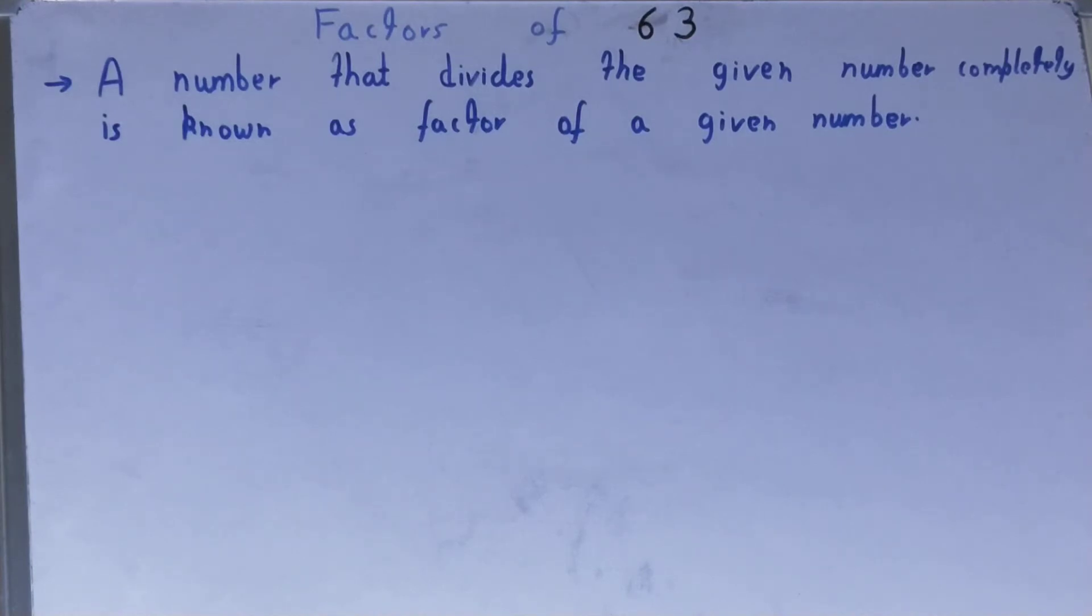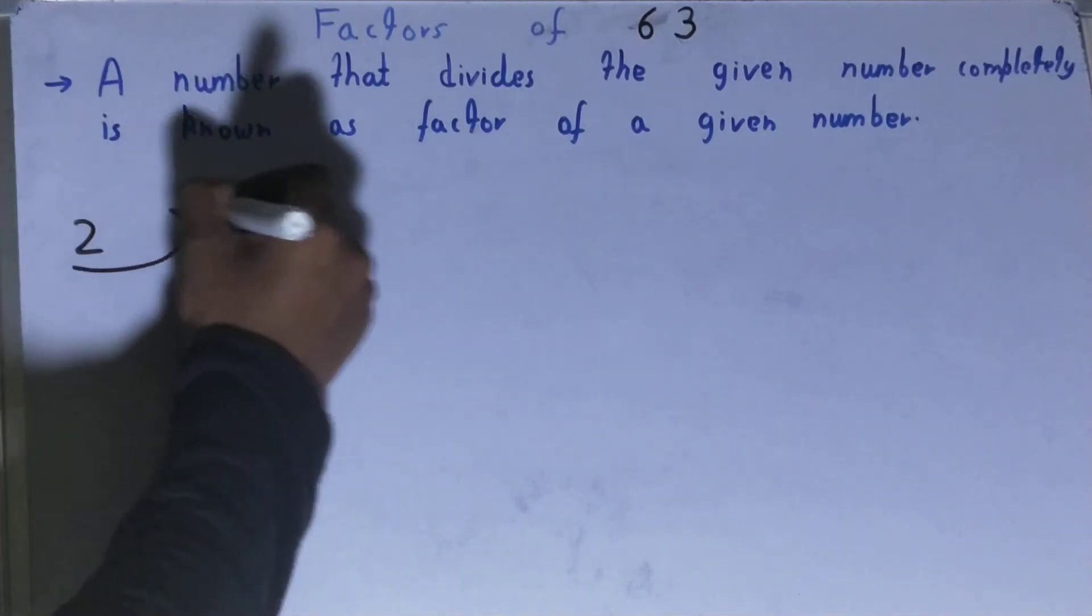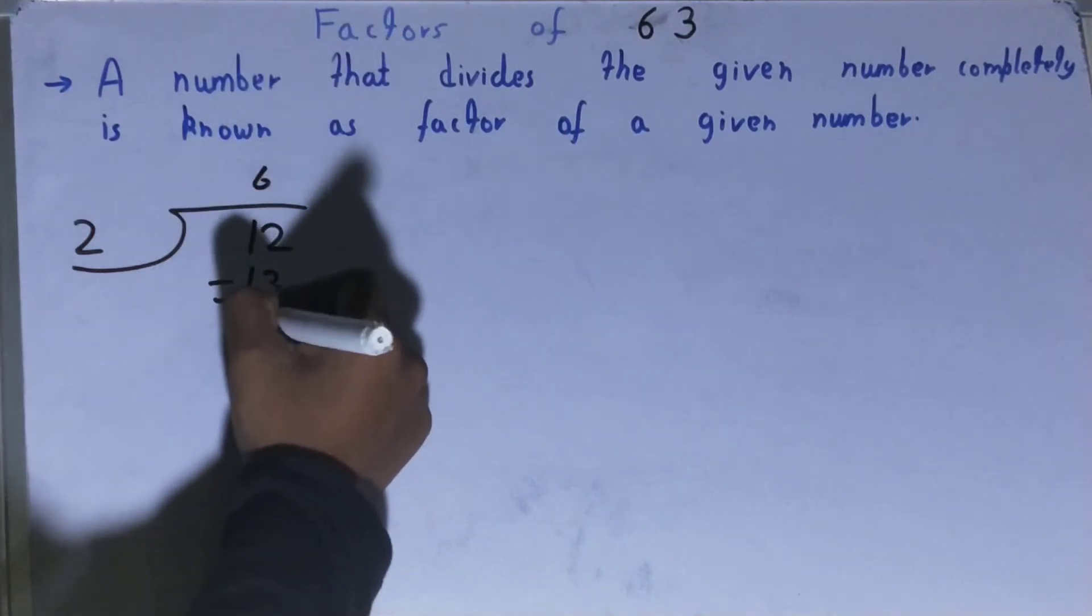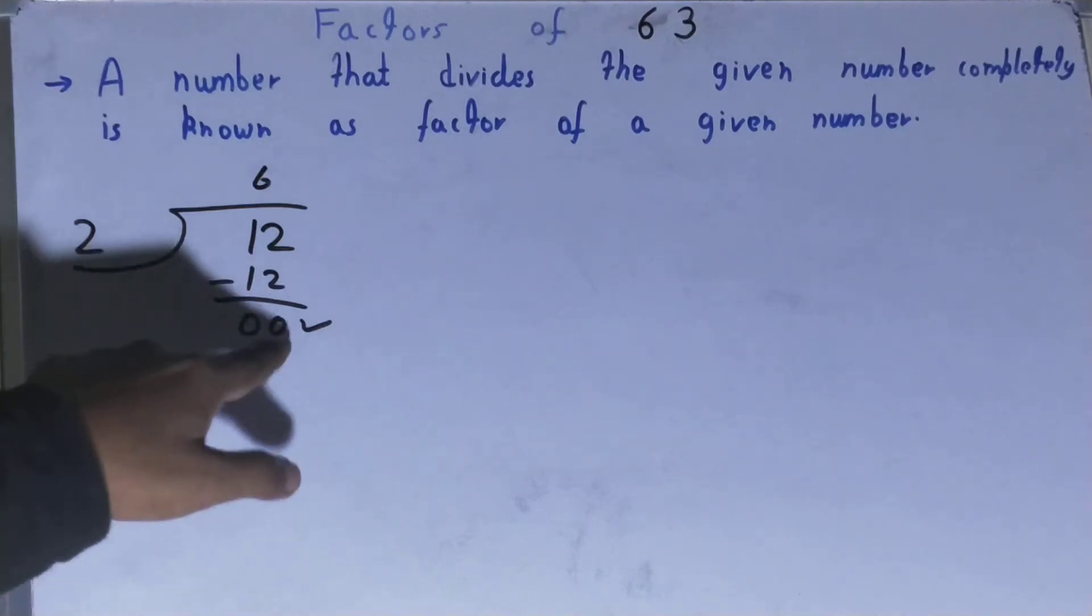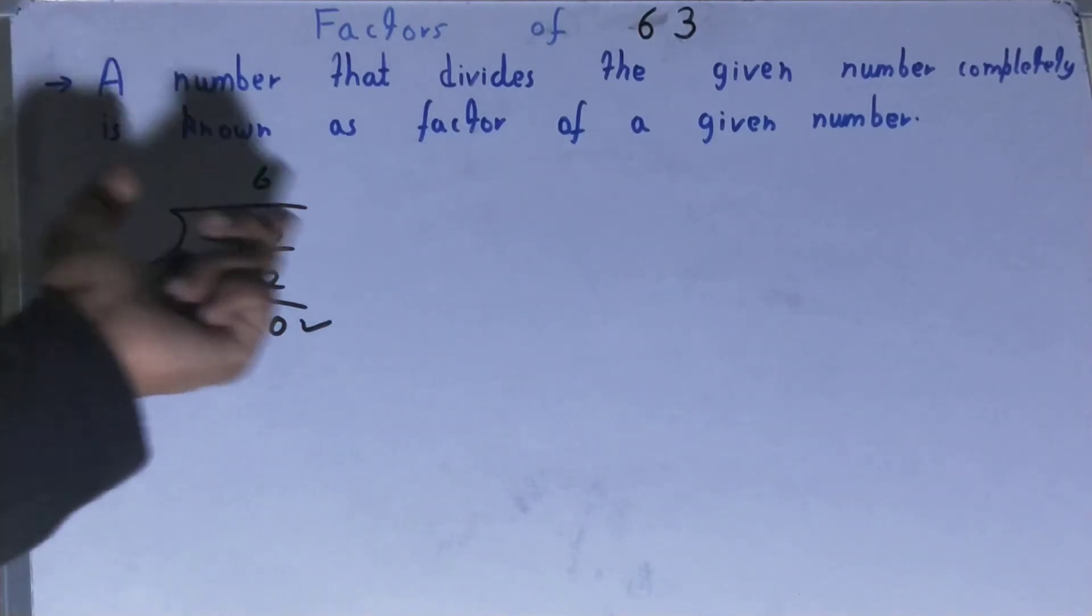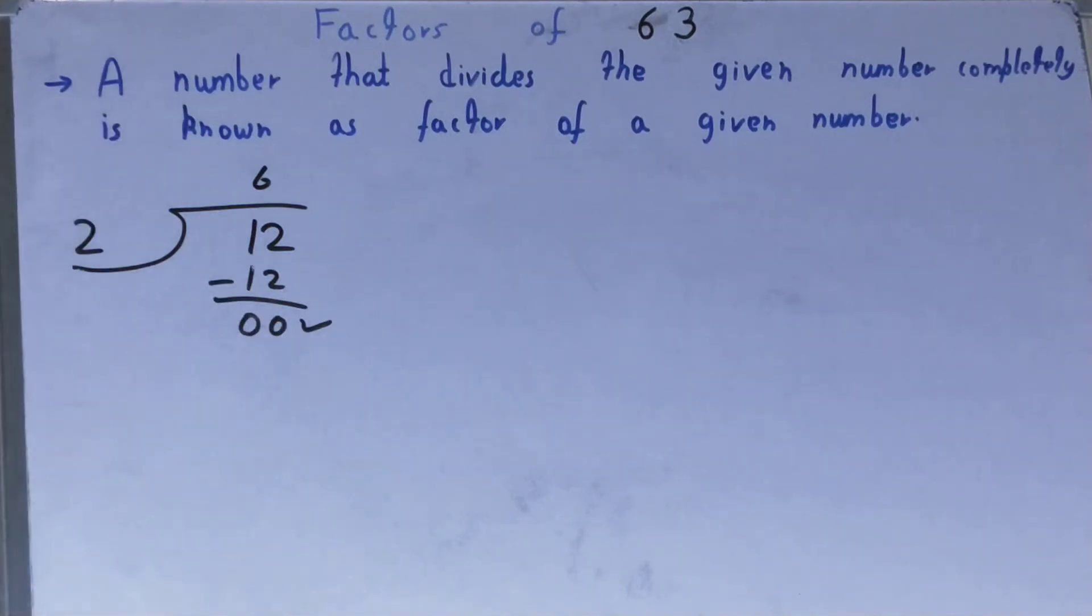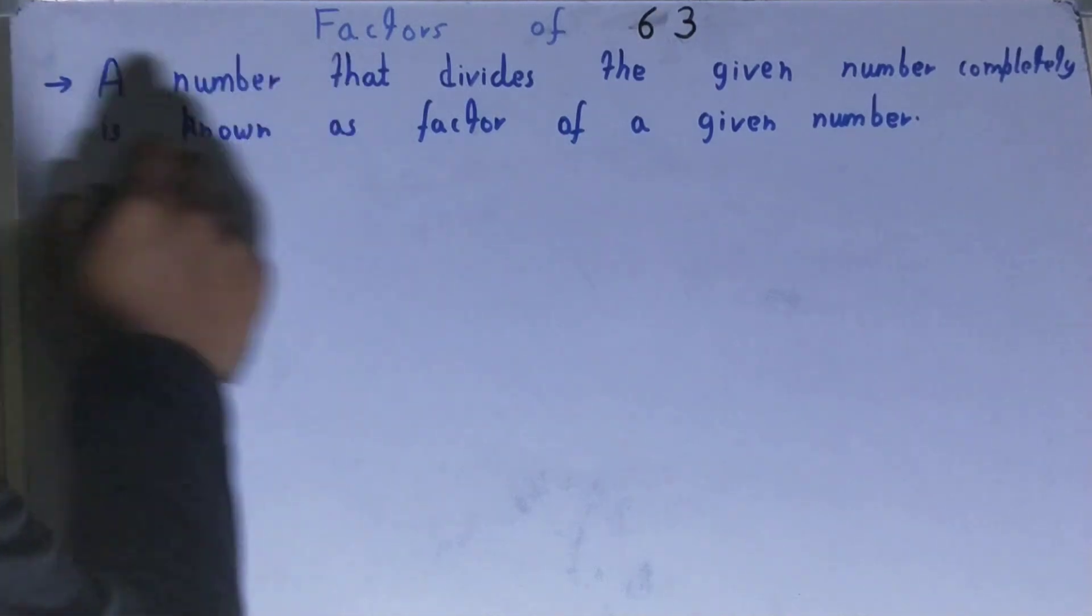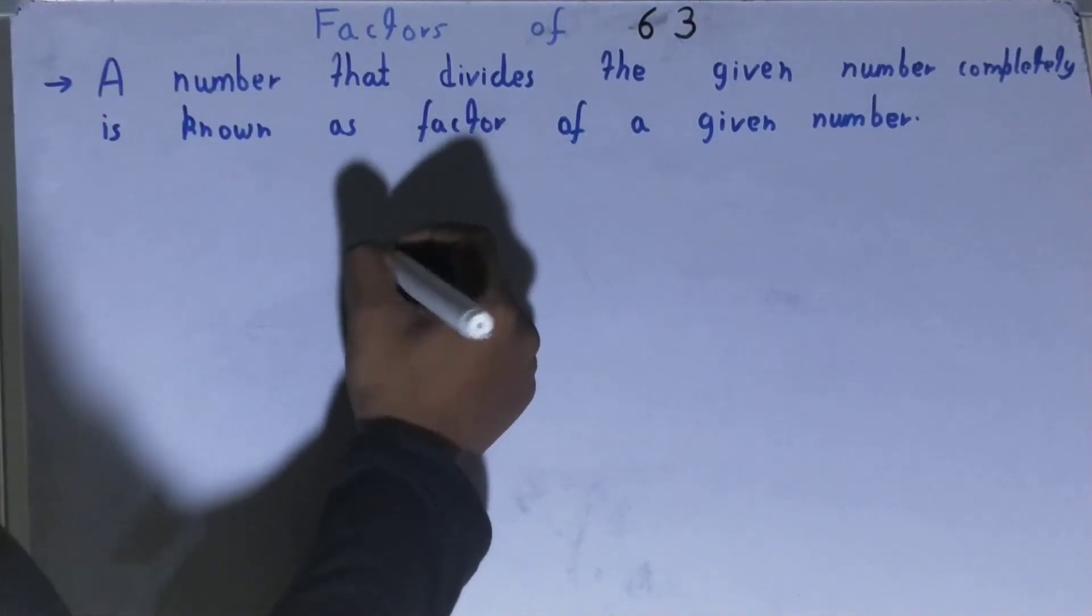If you did not understand, let me show you with the help of an example. Let's say you have two numbers, 2 and 12, and you have to check whether 2 is a factor of 12 or not. You'll check by simply dividing it. When you divide it, you'll get the remainder zero. If and only if you get the remainder zero, you can say that number is a factor of the given number. In this case, 2 is a factor of 12. If you don't get the remainder zero, then that number is not a factor of the given number.